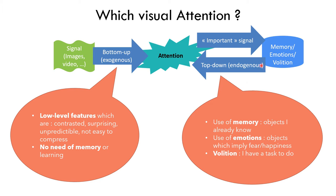On the other side, you have top-down or endogenous attention, where memory is very well involved. For example, I find an object that I already know and so I make attention on that. Emotions are very important — if something makes me happy or unhappy, then I will fixate on it. And volition: if I have a task to do, like searching for keys or whatever, I will modify the way I'm attending to my environment.